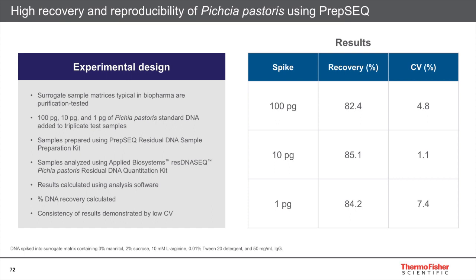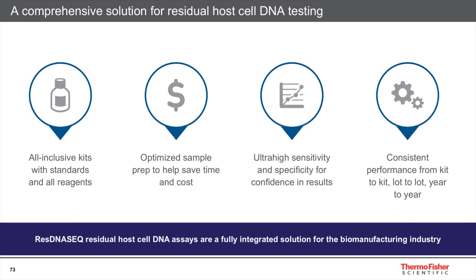Using PrepSeq with Pichia pastoris samples, across a range of concentrations from 100 picograms down to 1 picogram, we see nice consistent recovery typically above 80% with good reproducibility. In summary, we have a comprehensive solution for residual host cell DNA quantitation — a full workflow solution including all required standards and reagents, an optimized automatable sample prep with PrepSeq chemistry, and an assay that is extremely sensitive and specific, with very high consistency kit to kit and lot to lot on an ongoing basis.